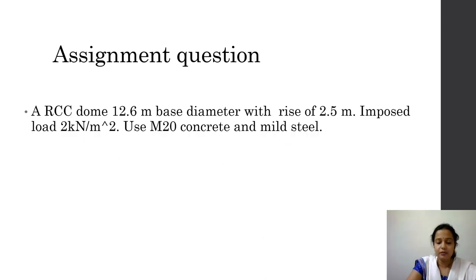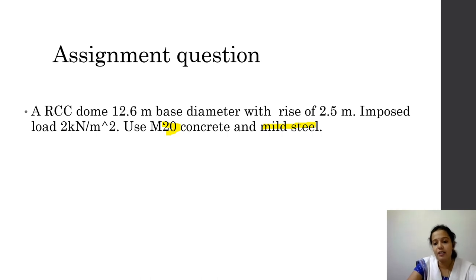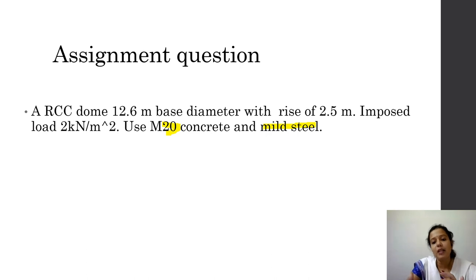For the assignment question, the difference is the grade of steel is mild steel (Fe 250). For mild steel, the sigma_st value will be different (140 N/mm²) and the minimum percentage of reinforcement is 0.15% per direction, totalling 0.3% in both directions.